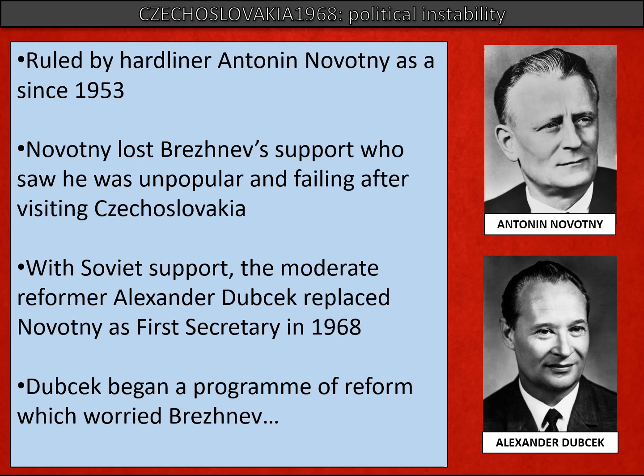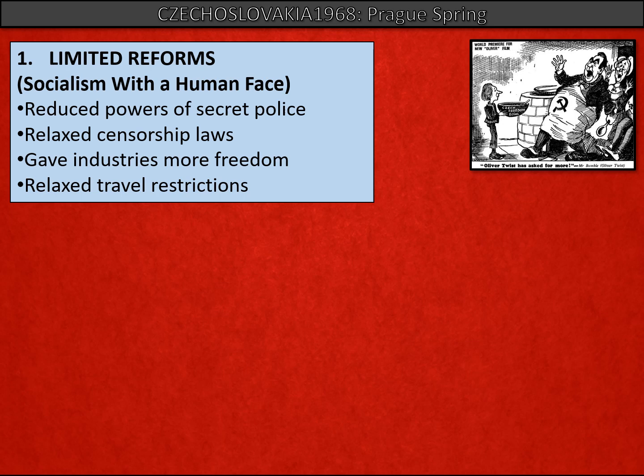When Dubček took office, he began a reform programme that was carefully monitored by Moscow — and as he went forward, Moscow became increasingly concerned. His programme, called 'Socialism with a Human Face,' tried to remove some of the excesses of Novotny's regime: it limited the secret police force's powers, relaxed censorship, gave more freedom to industries to produce what they wanted, and relaxed travel restrictions so Czechoslovakian people were more free to leave the country.